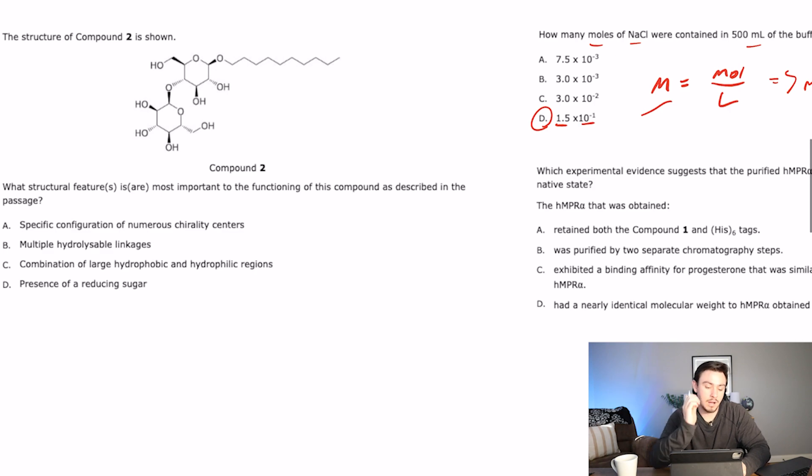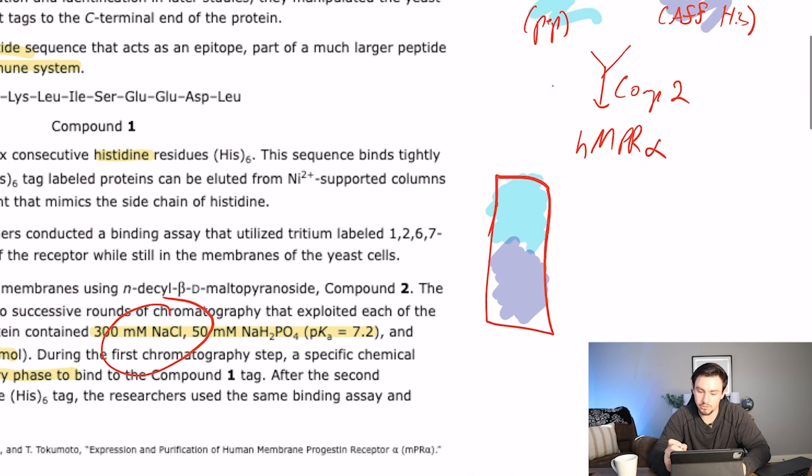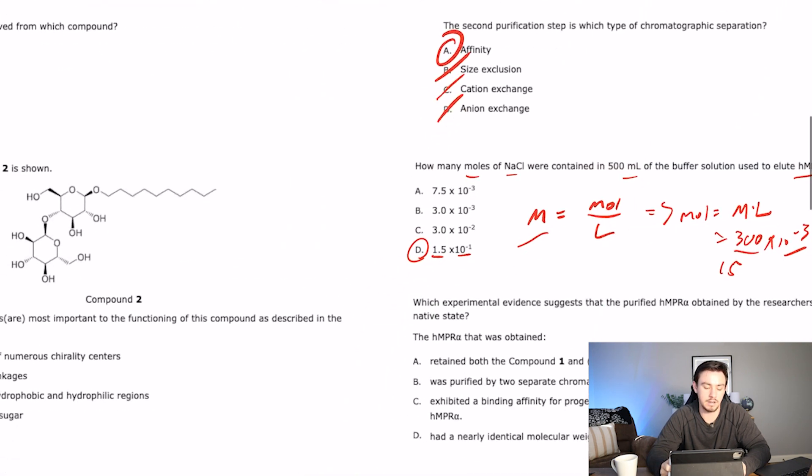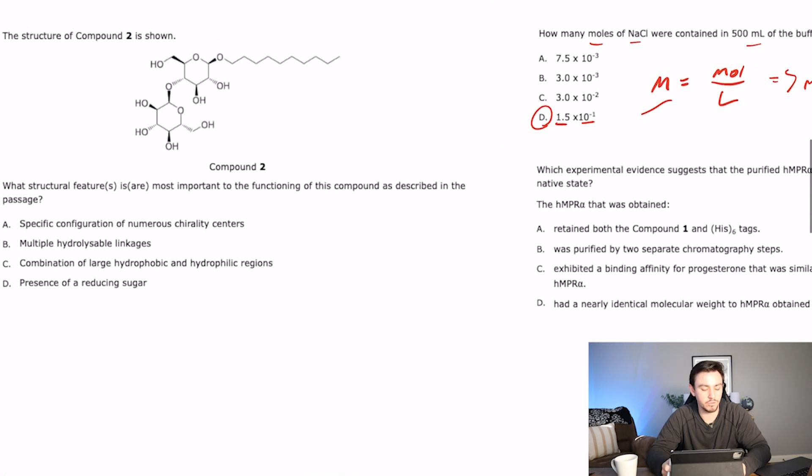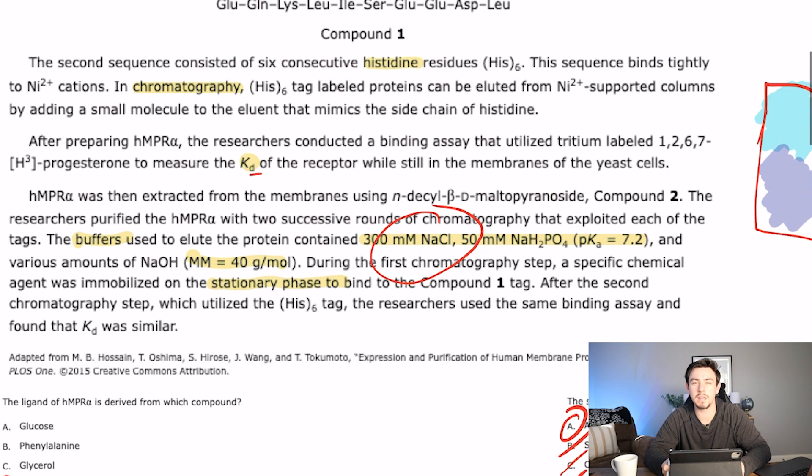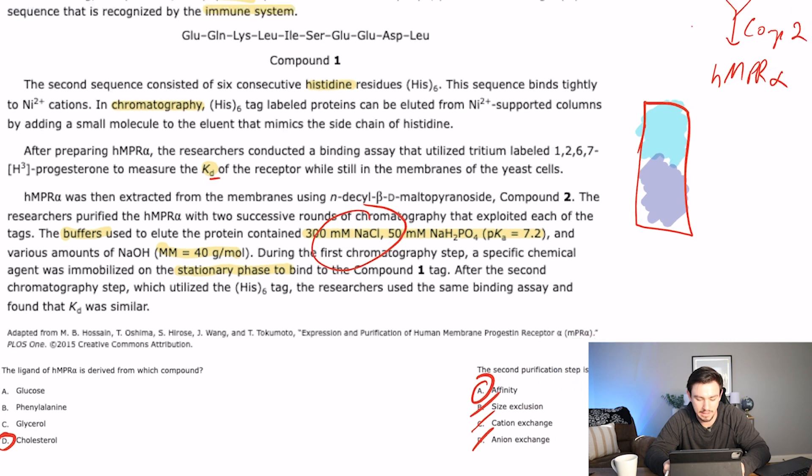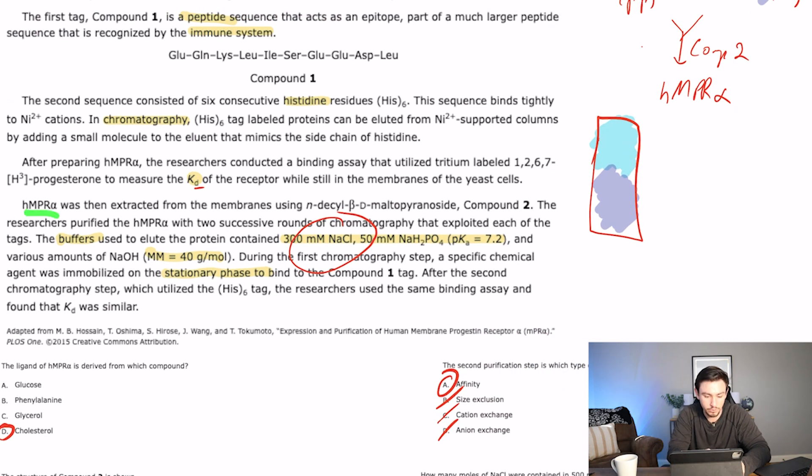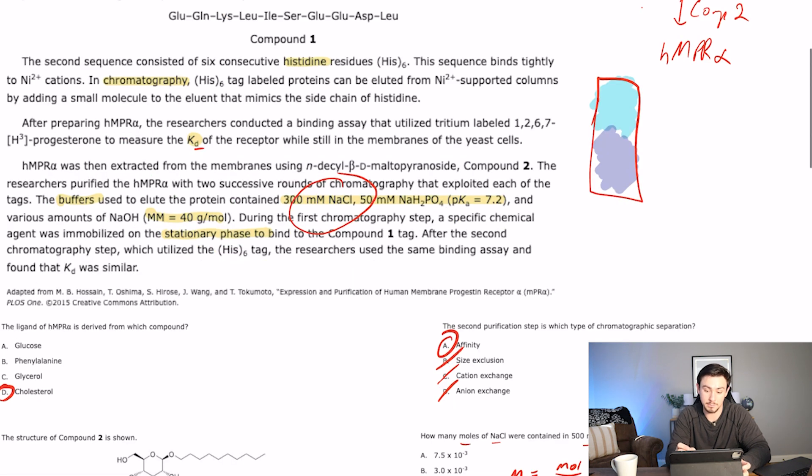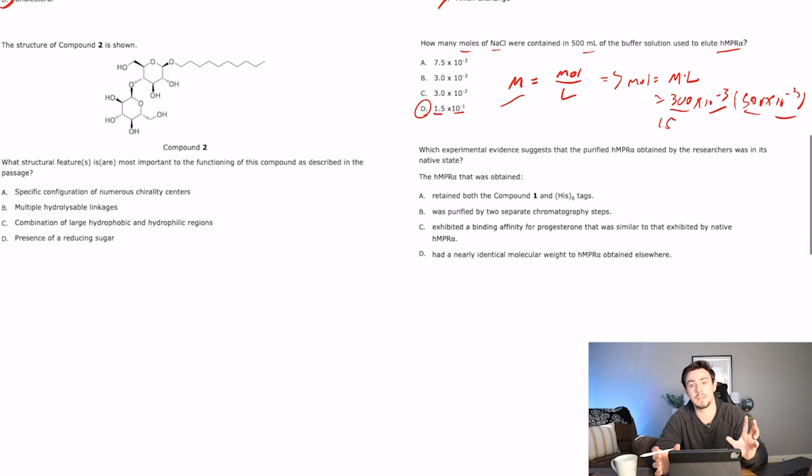Number next says the structure of compound 2 is shown. Okay, compound 2, that's the one that kind of helped us select for HNPR alpha. Which structural features is or are most important to the functioning of this compound as described in the passage? Okay, let's go back and refresh ourselves on how this compound was actually functioning. It says that we used it to extract from membranes. Okay, that's all it says about it. So compound 2 is used to extract from membranes. Extraction from membranes is a job pretty much reserved for detergents.